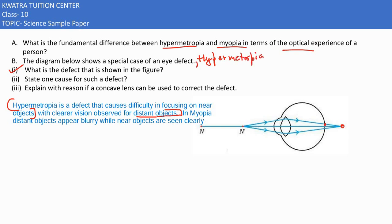Then we have, first one is hypermetropia. State one cause for such a defect. What is the cause here? It might be there because of the shortening of eyeball. This is one of the causes.